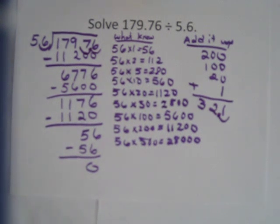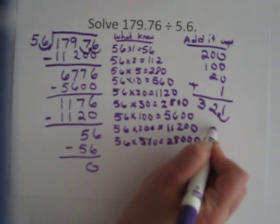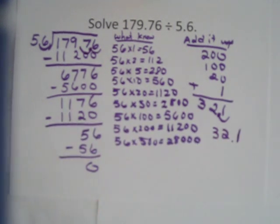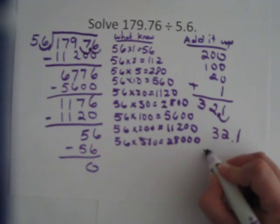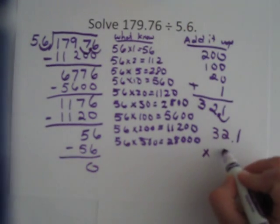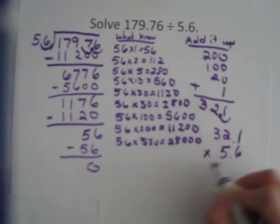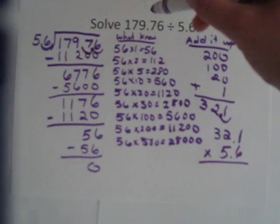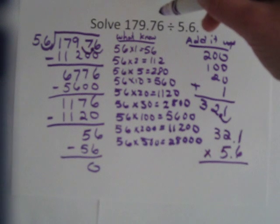Now I need to check that. So I'm going to use multiplication to check that, because we always have to check division using multiplication. So now if I take that answer, 32 and 1 tenth, and multiply it by the 5.6, or the 5 and 6 tenths, I should hopefully get back to this number, 179 and 76 hundredths.